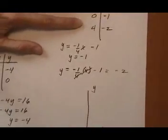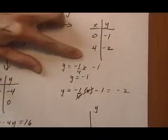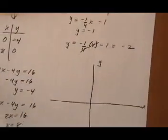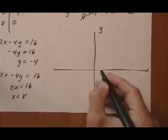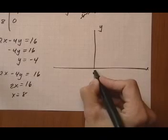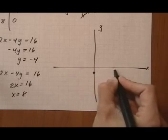So the first points were, let's see, 0 minus 1 and 4 minus 2. 0 minus 1, 4 minus 2.